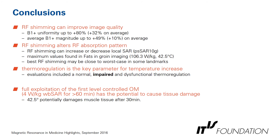In conclusion, RF shimming can improve image quality — B1+ uniformity can increase by up to 80% and average B1+ magnitude by up to 50%. However, RF shimming alters RF absorption patterns and can increase or decrease local SAR. Maximum values are found in Feds in groin imaging at 106 W/kg. The best RF shimming may actually be close to worst-case SAR in some landmarks. Thermoregulation is the key parameter for temperature increase. Full exploitation of the first-level controlled operating mode has the potential to cause tissue damage, since 42.5°C for more than 30 minutes has the potential to damage muscle tissue.